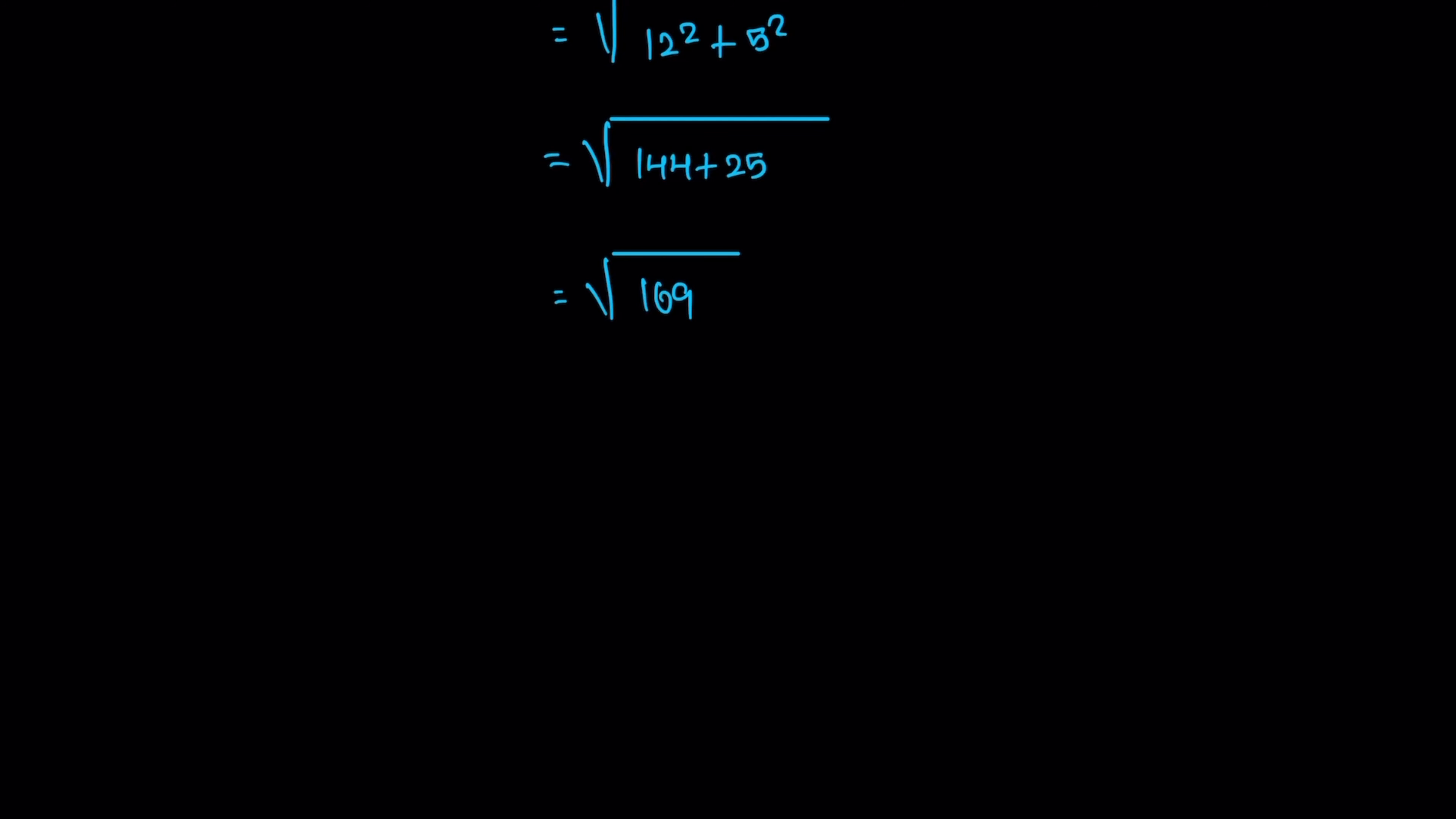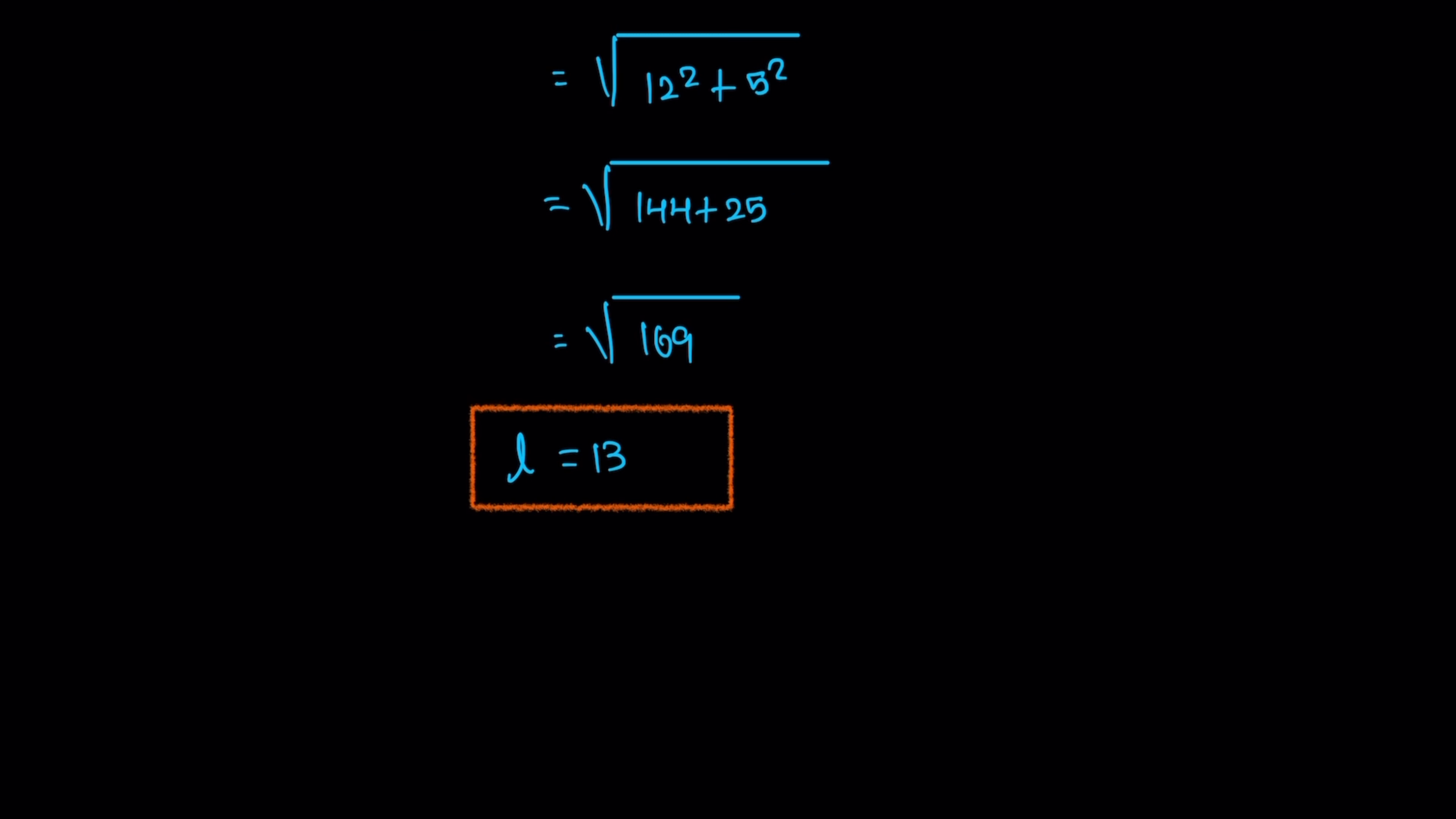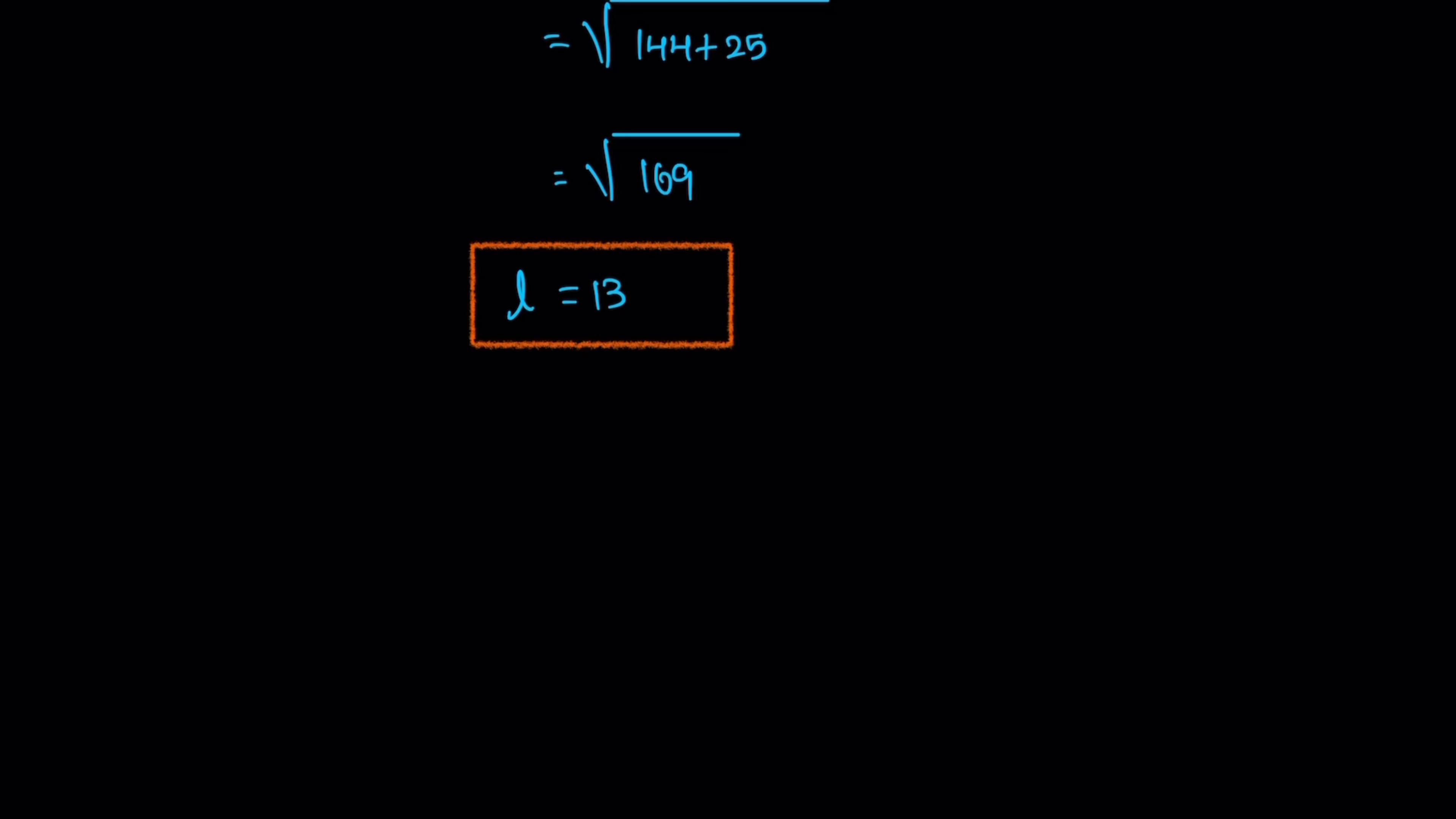So 169 is a perfect square. The square root is equal to 13. L is equal to 13. The remaining unit is centimeter. So L is equal to 13 centimeters.